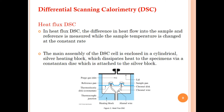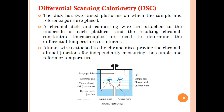In heat flux DSC, the difference in heat flow into the sample and the reference is measured while the sample temperature is changed at a constant rate fixed in the temperature program. The main assembly of the DSC cell is enclosed in a cylindrical silver heating block, which dissipates heat to the specimen via a constantan disk attached to the silver block. The disk has two raised platforms on which the sample and reference pans are placed.